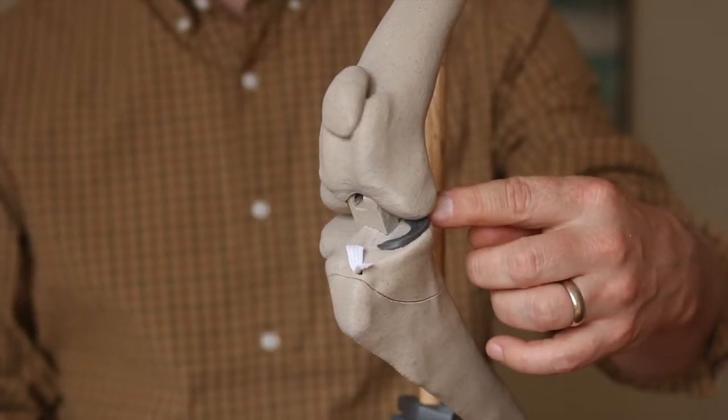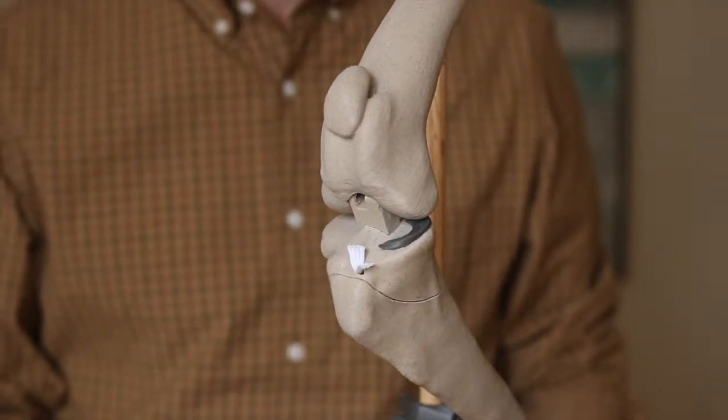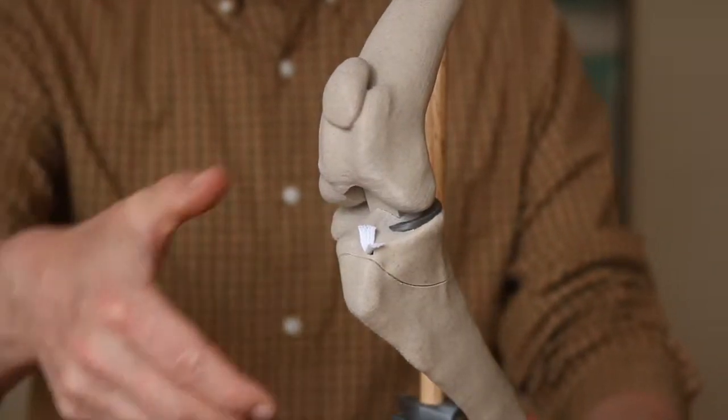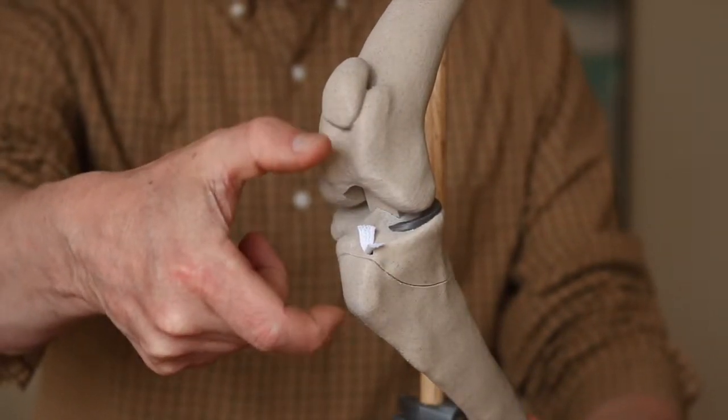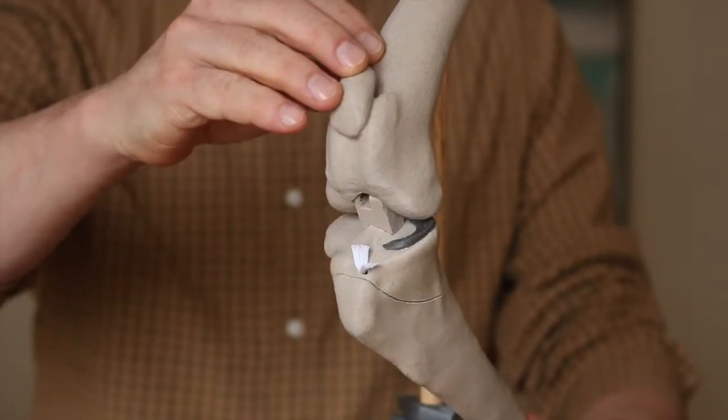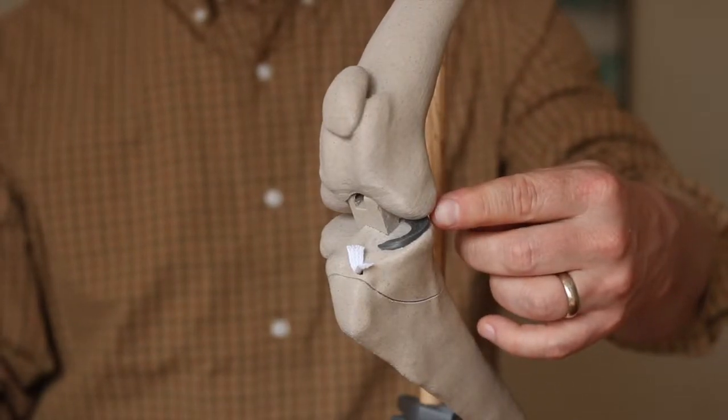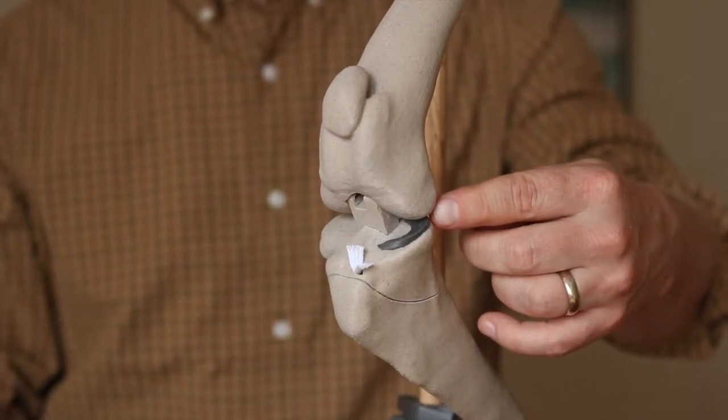The other structure to mention is this gray pad here—that's the medial meniscus, and it's a shock absorber that cushions the impact between the femur and the tibia. When the cranial cruciate ligament is torn and you start to get a lot of this drawer movement, you can see that the back end of the medial meniscus gets crunched between those two bones and can become torn.